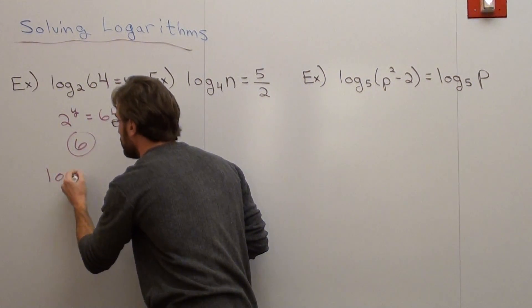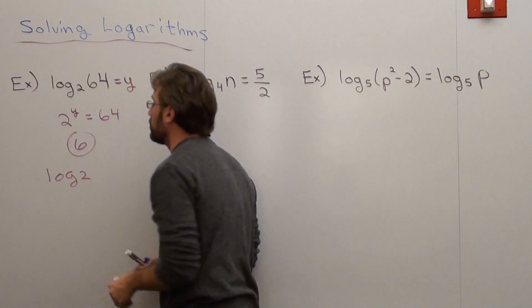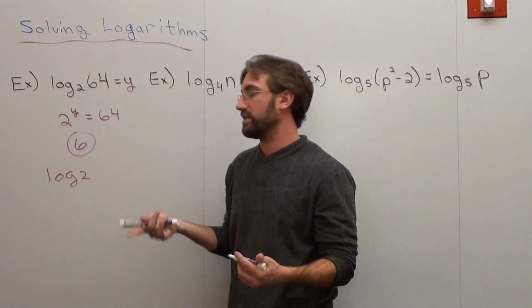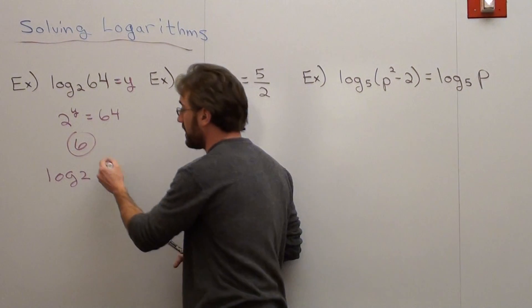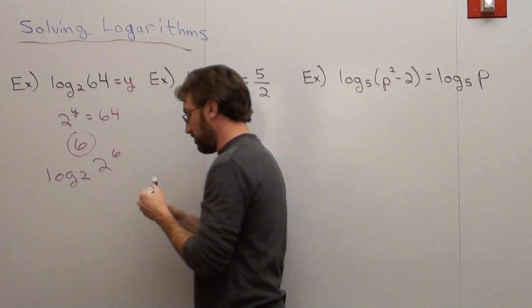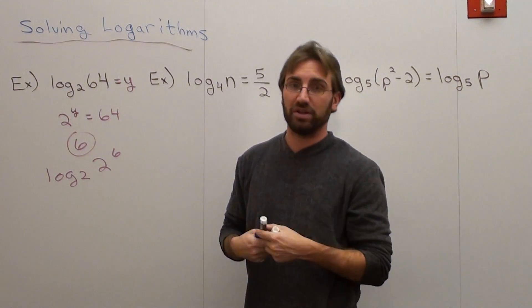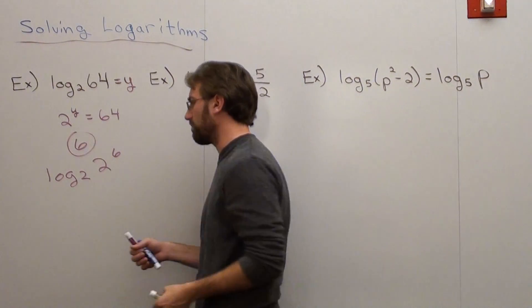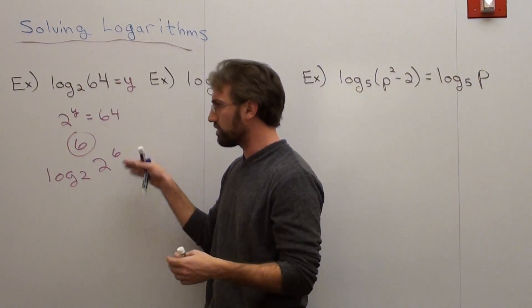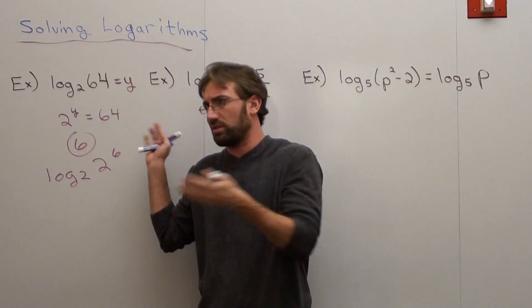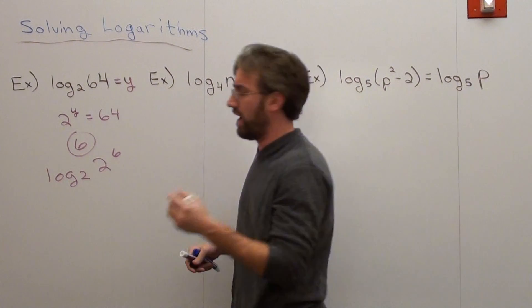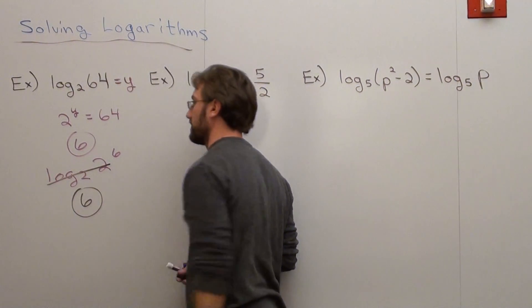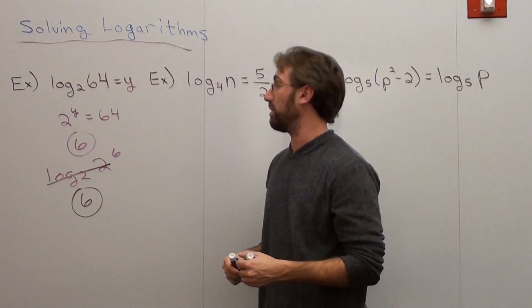Log base 2 — what you do is simplify the number 64. What can you write it as? You can write it as 2 to the 6th. Using the inverse property of logs, you've got log base 2 and that same number as a base — they're the same, so they cancel. Answer's 6. Two different ways to do the same problem.